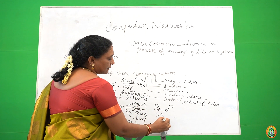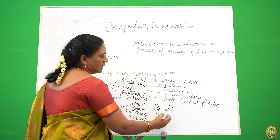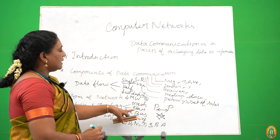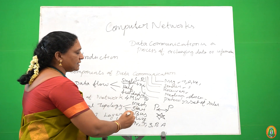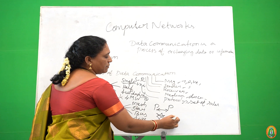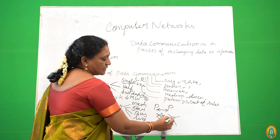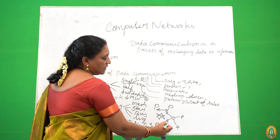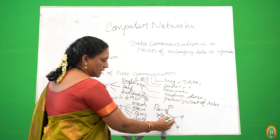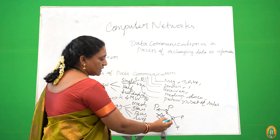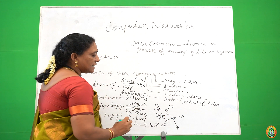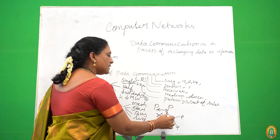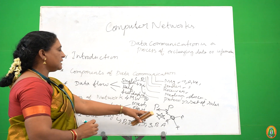Mesh topology is where more than one device is connected to each other. And then the next one is star topology. Star topology is nothing but the center topology — it is the server. The receiver sends a request to the server; the server accepts the request and sends the message to the receiver. We can have more than one receiver using the same server in star topology.